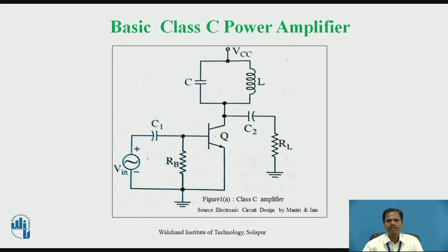This figure shows the circuit diagram for a basic Class C power amplifier. The Class C power amplifier consists of a parallel resonance circuit, which consists of a parallel connection of an inductor and capacitor, called a tank circuit. This tank circuit is connected in the collector circuit of the power transistor. The input AC signal to be amplified is coupled to the input of the amplifier using capacitor coupling, with the use of capacitor C1.